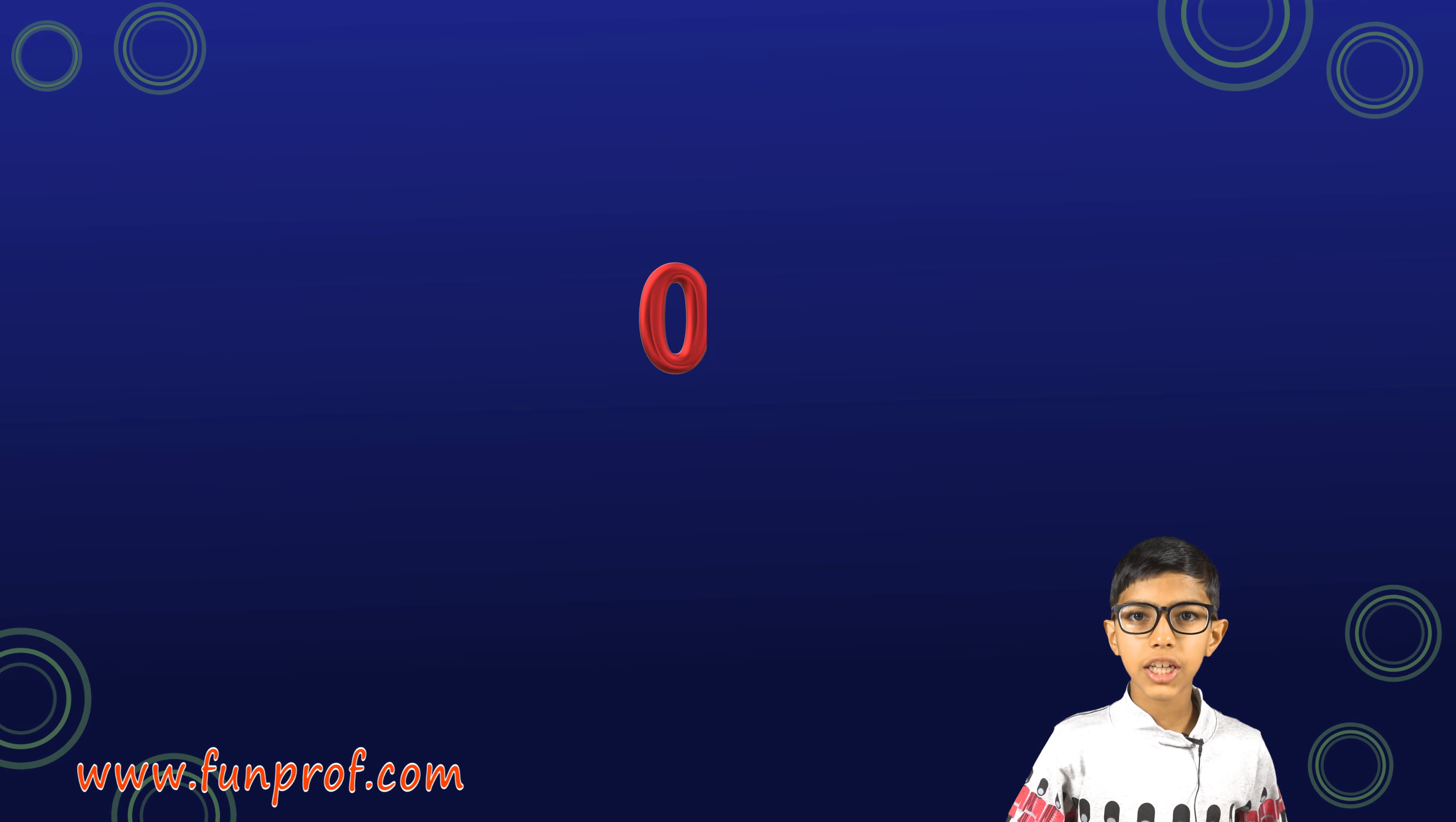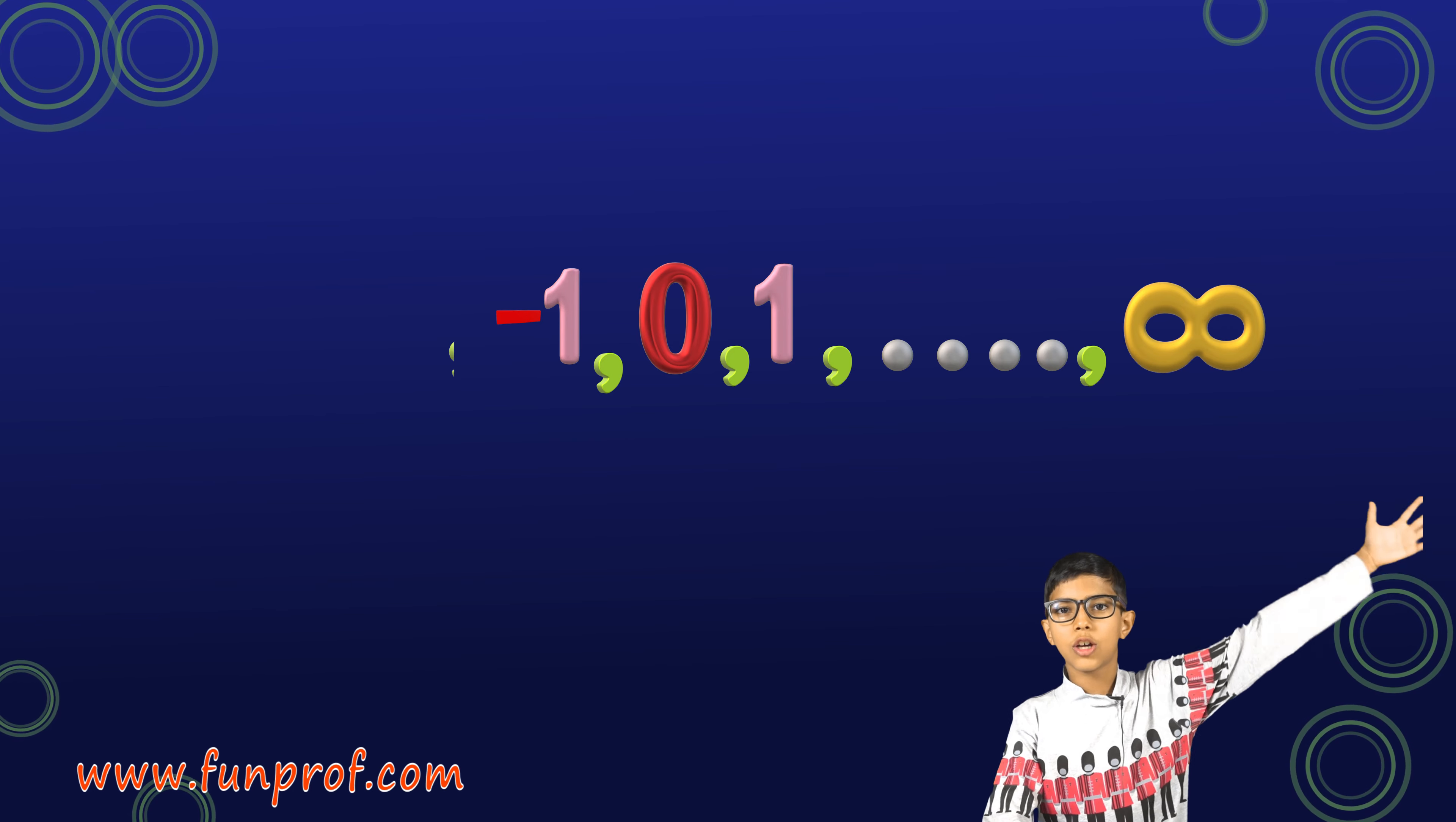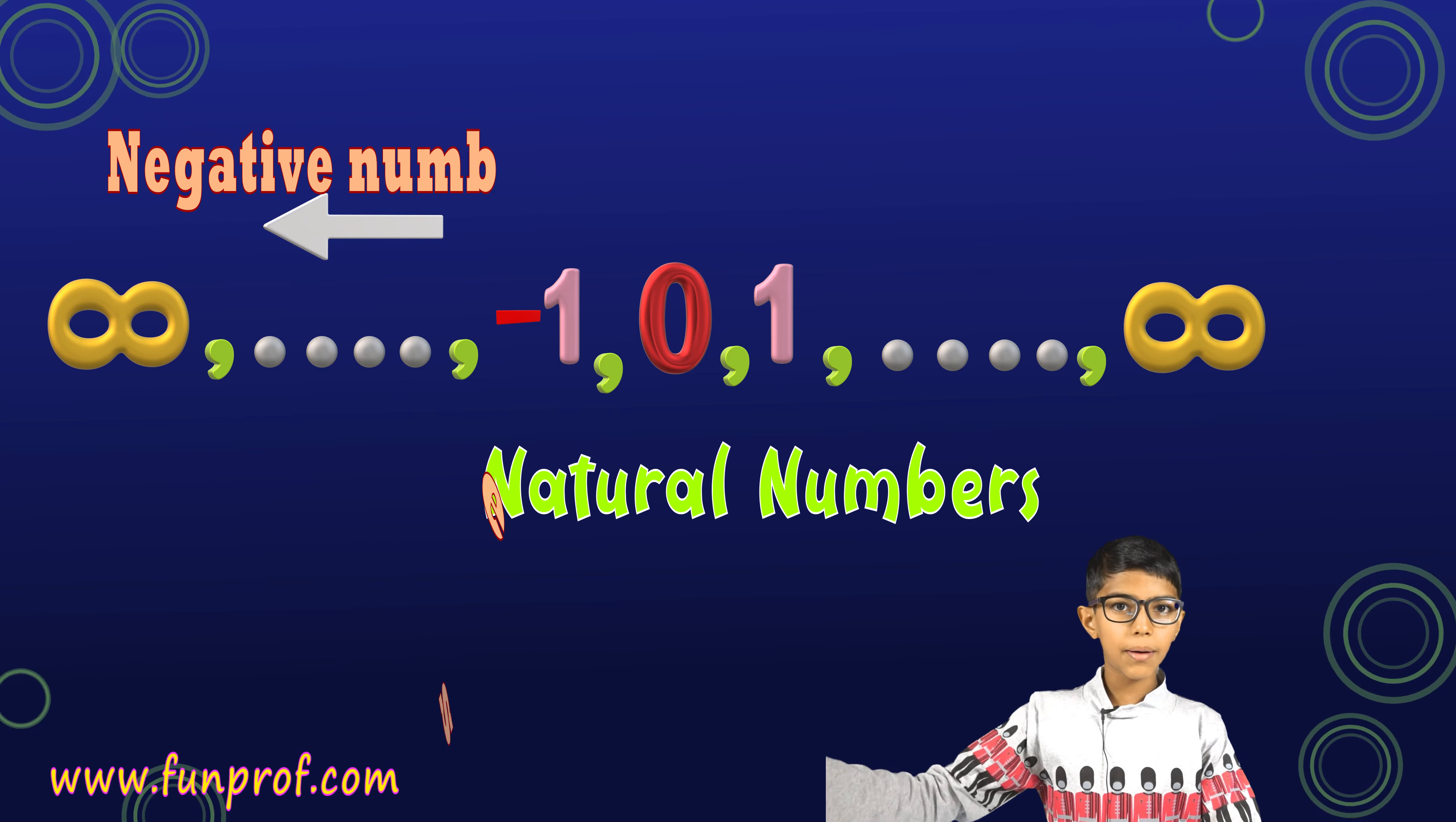First is the negative numbers. But before that we know that there is 0 and after that there is a number line. But what's before 0? We don't know. So let's subtract 1 from 0. We get a new set of numbers.